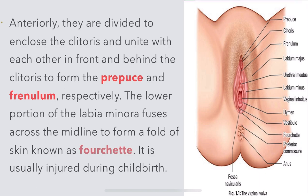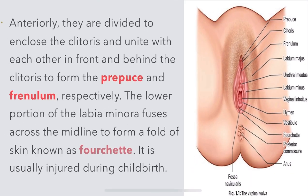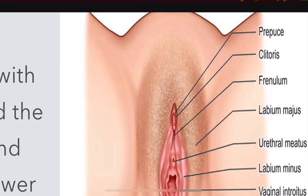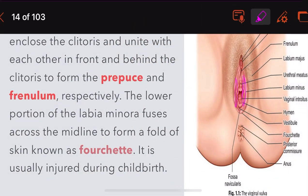The labia minora anteriorly enclose the clitoris, uniting on either side in front and behind the clitoris to form the prepuce and the frenulum. You can see the prepuce on the upper part and the frenulum posteriorly. The lower portion of the labia minora fuses in the midline to form the fourchette, which is also injured during childbirth.